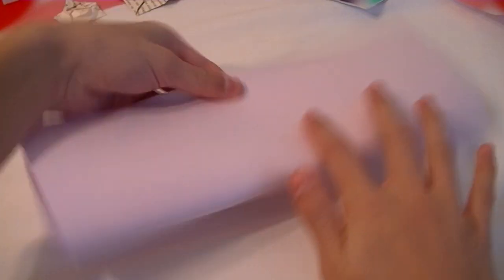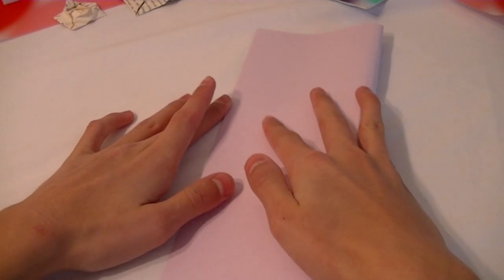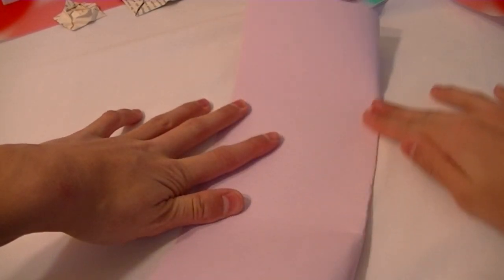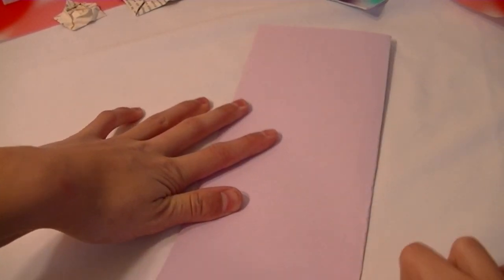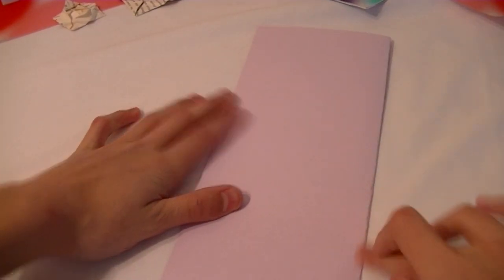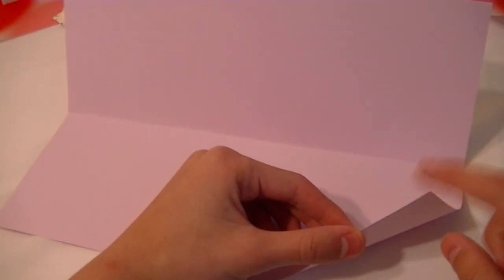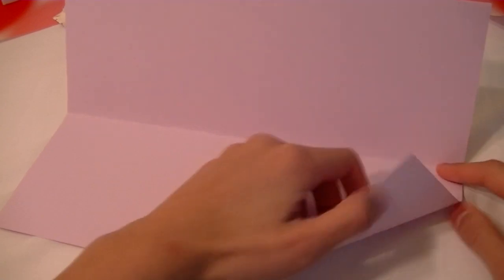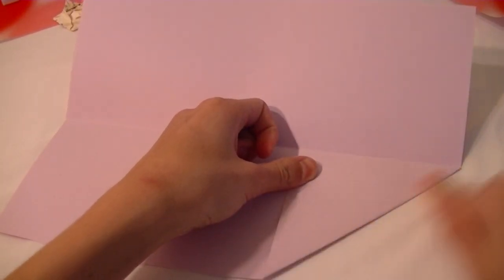So your first step is going to be to fold this in half like this. Make sure everything lines up. You could use any paper, memo paper, lined paper, cardstock. This happens to be cardstock. Then you just flip it over and fold these two ends along the line like you guys are making a paper airplane.